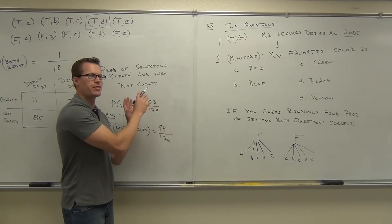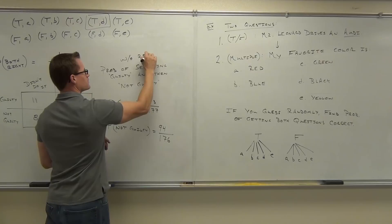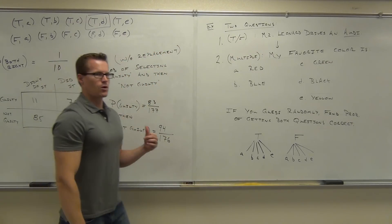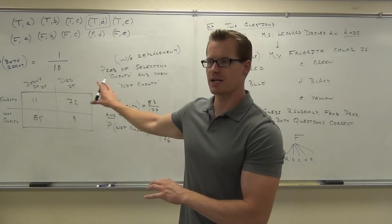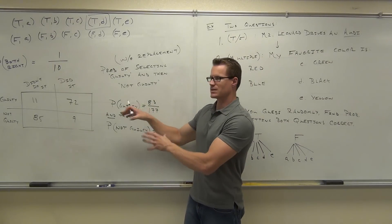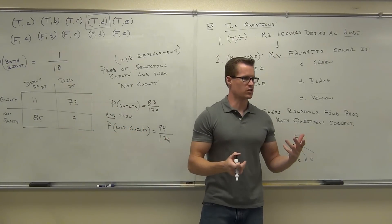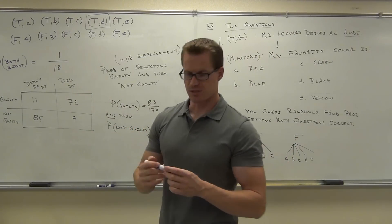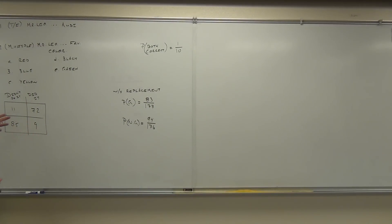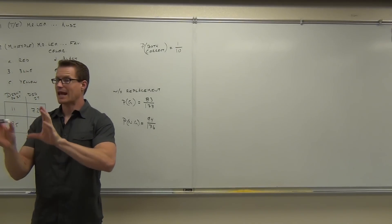This would be without replacement. Remember this idea for when we talk about conditional probability — it's all based on this. The key things we need to know are that 'and' means 'and then,' like successive events — the probability of one occurring and then another occurring. It's different than the addition rule.